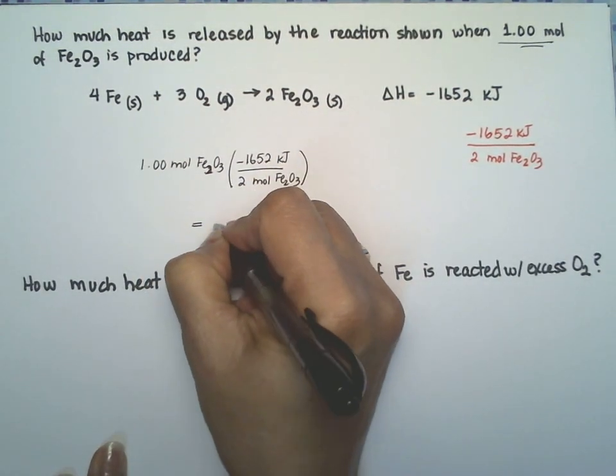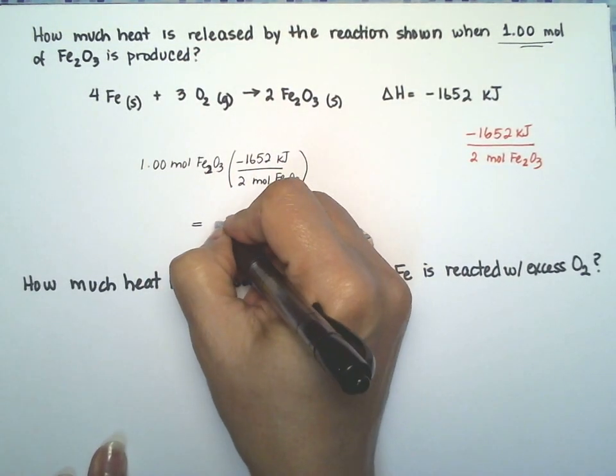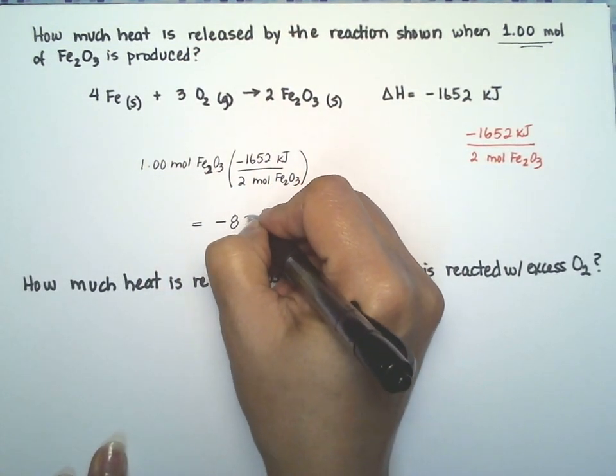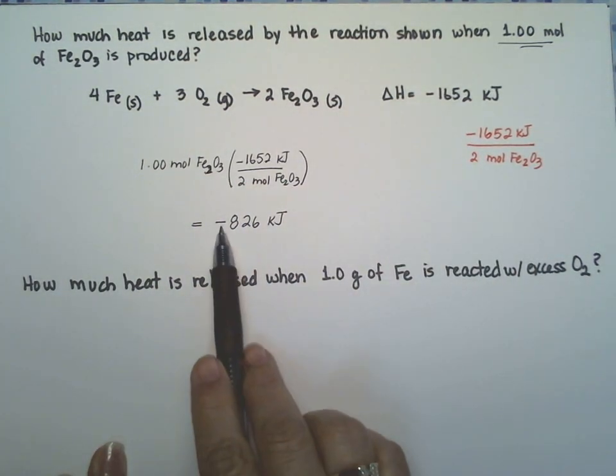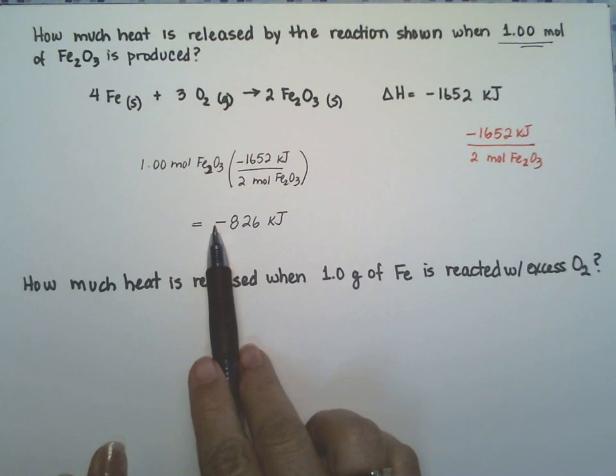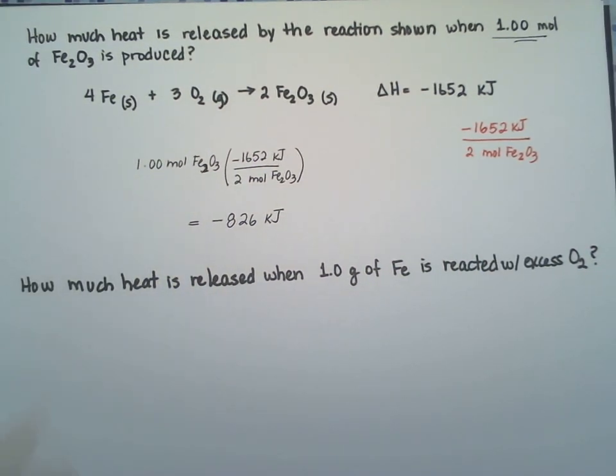So that gives you that for each mole of the oxide, it releases 826 kilojoules. Remember, the negative tells you that the reaction is exothermic and that the heat is going to be released into the surroundings.